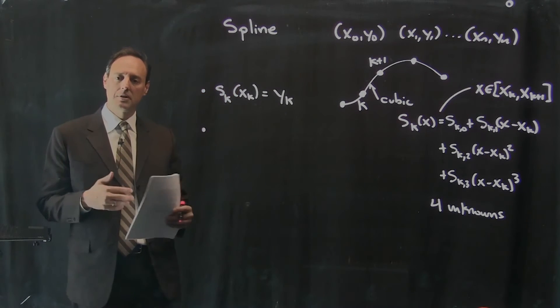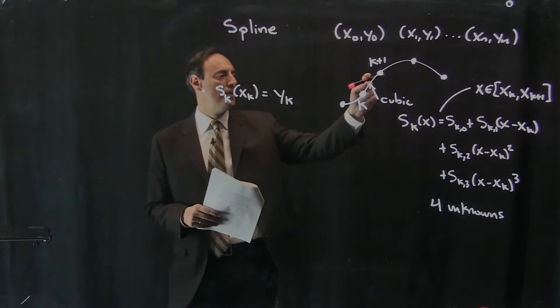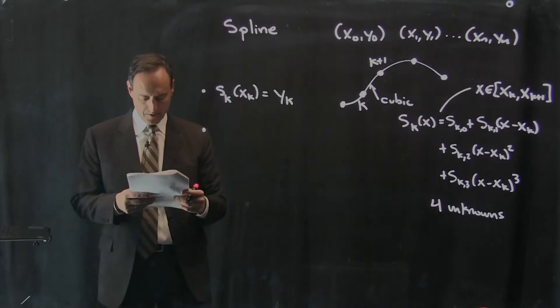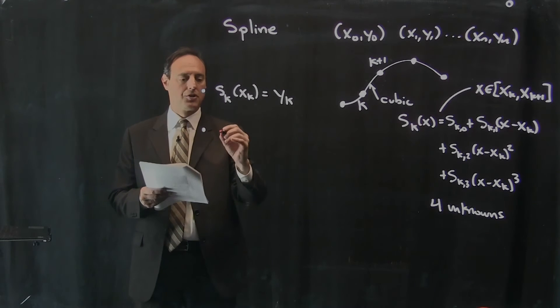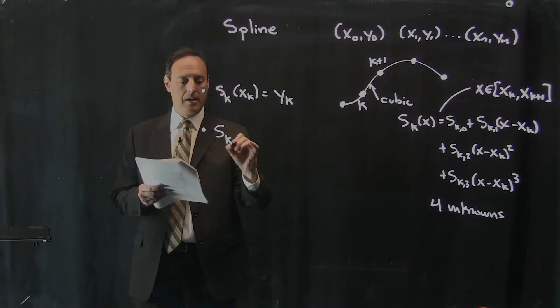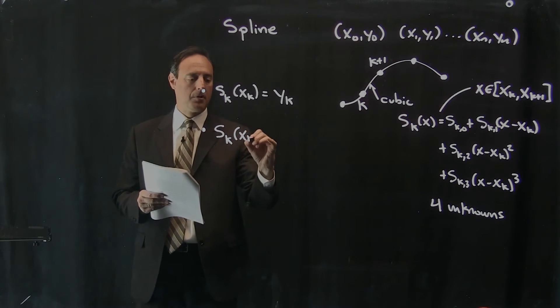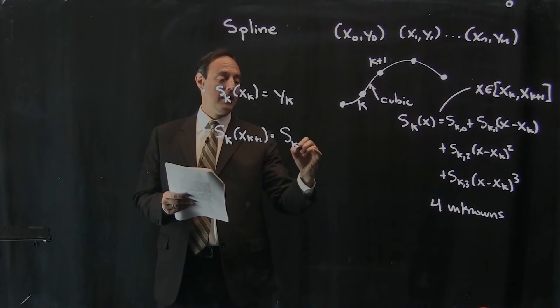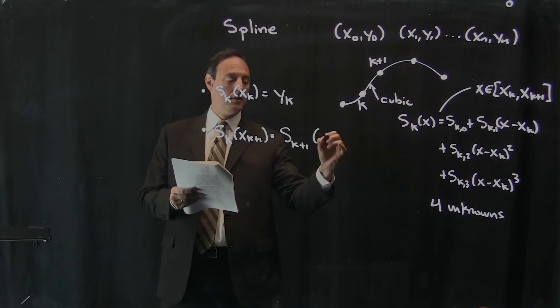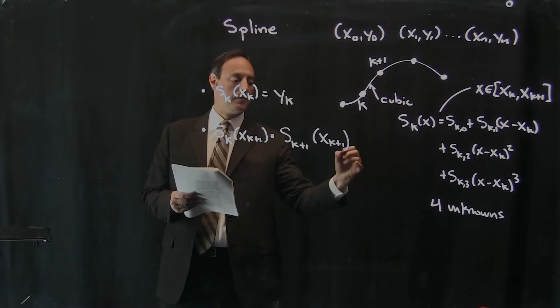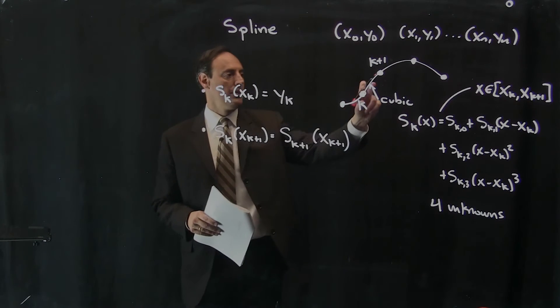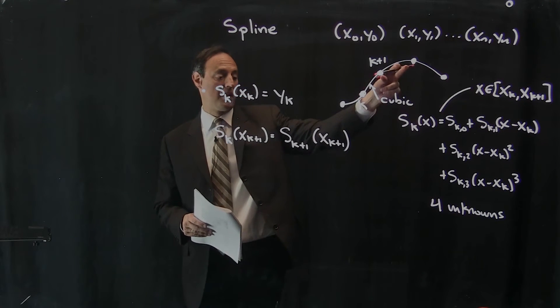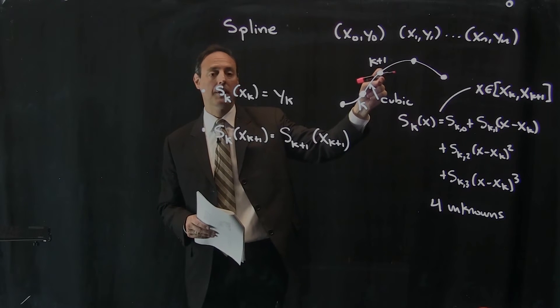Constraint number two, the spline is going to look continuous. So this spline is going to connect to this spline. So in other words, at the boundaries, they're going to have to match. s of k at x of k plus one is equal to s of k plus one at x of k plus one.